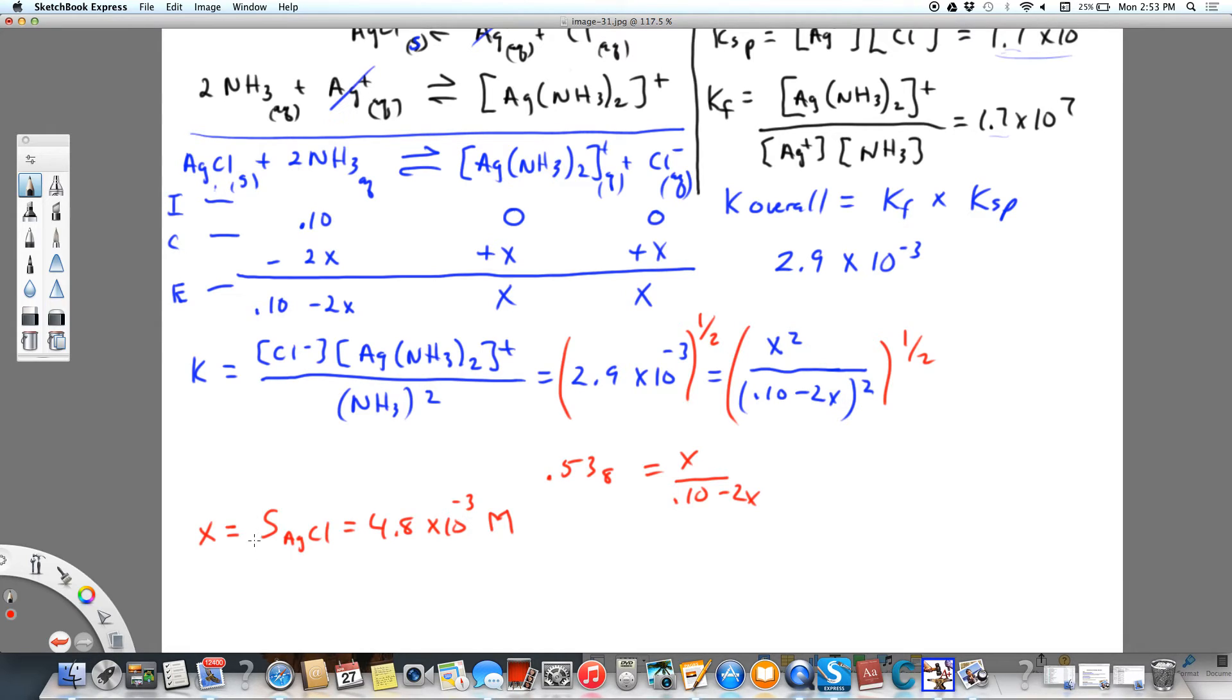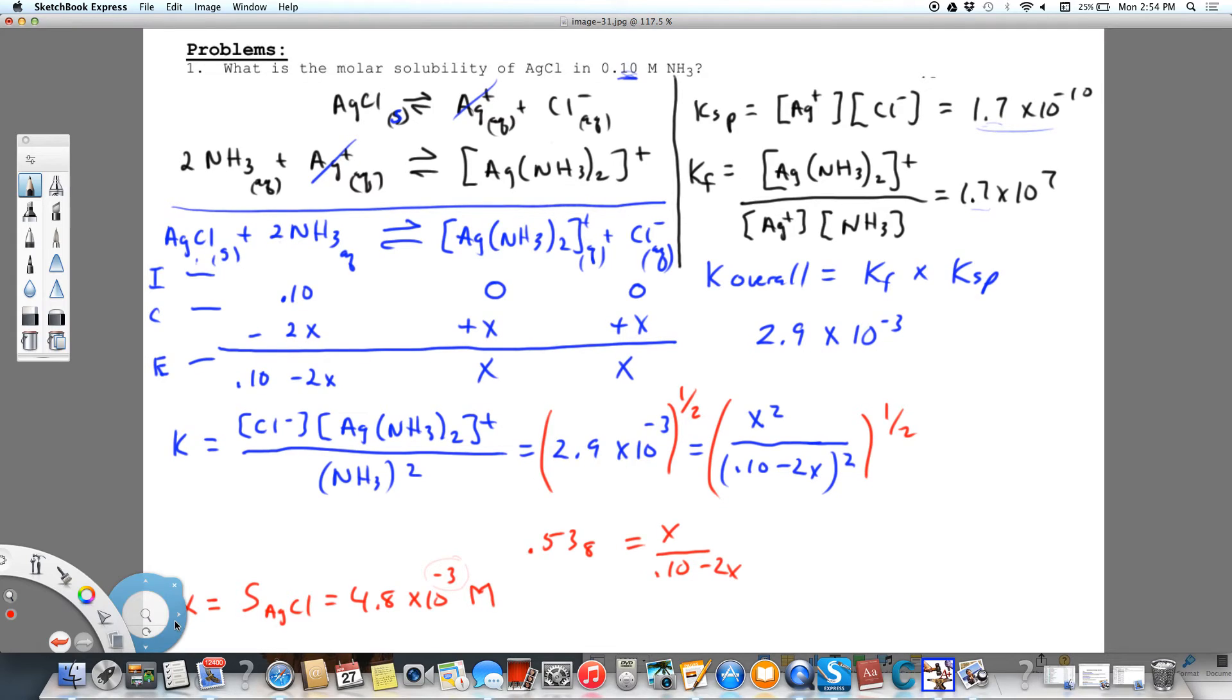So if I wanted to know what mass I could add, you can see this is going to be a lot more soluble than if we had not added the ammonia, because our Ksp is so small. I just wanted to add one more thing. I'm going to take the 4.8 times 10 to the minus 3 moles per liter, and that's of AgCl. And I'm just going to figure out how many grams that would be per liter as a little bonus.